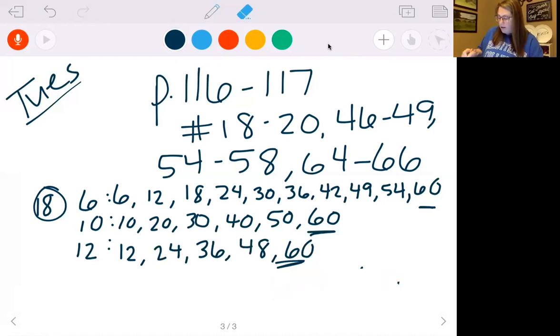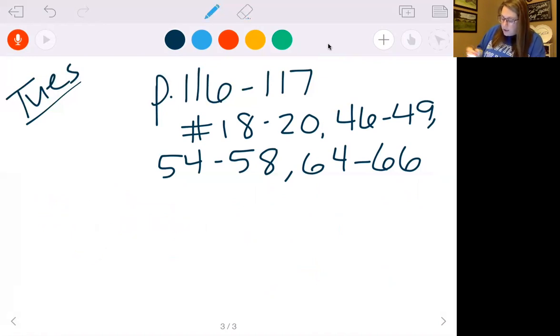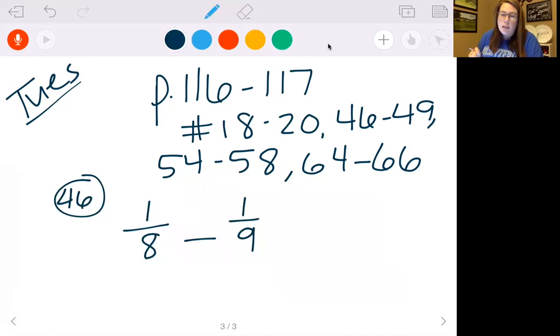That's number 18. You're going to do the same thing for 19 and 20. It is a lot of work, but unfortunately, it's just how it is with these. Number 46, it says compare using greater than, equal to, less than. So they have one eighth and one ninth. Let's use our new way. Nine times one is nine. Eight times one is eight. So one eighth is greater than one ninth. You'll do that for 47, 48, and 49.